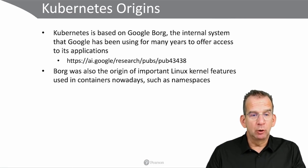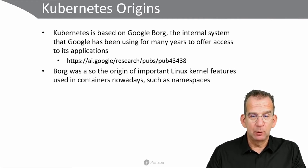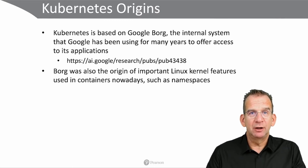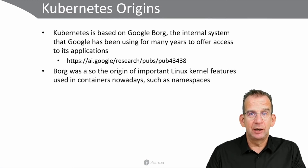Borg not only was the origin of Kubernetes, it also was the origin of pretty important Linux features that are used in containers nowadays. Think of namespaces. Think of cgroups, which both were proposed by Google as an addition to Linux. And it shouldn't be a surprise that Google internally was running their applications on top of Linux as well as the orchestration platform.